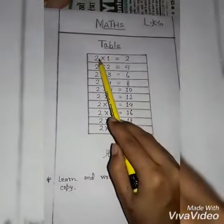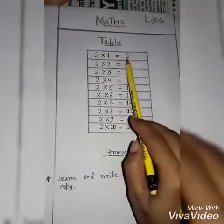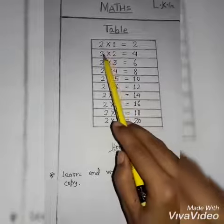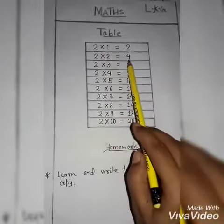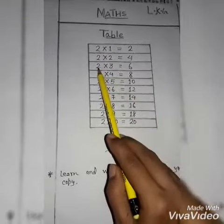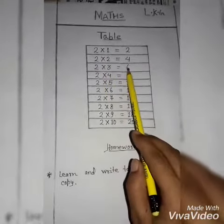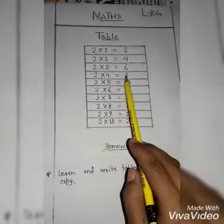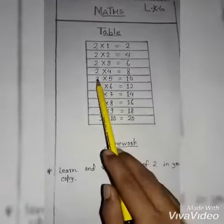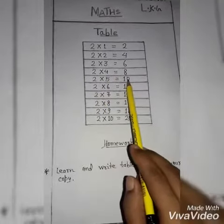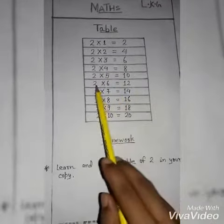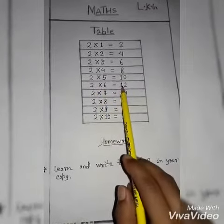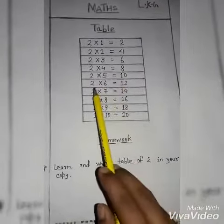Table of 2: 2×1=2, 2×2=4, 2×3=6, 2×4=8, 2×5=10, 2×6=12.